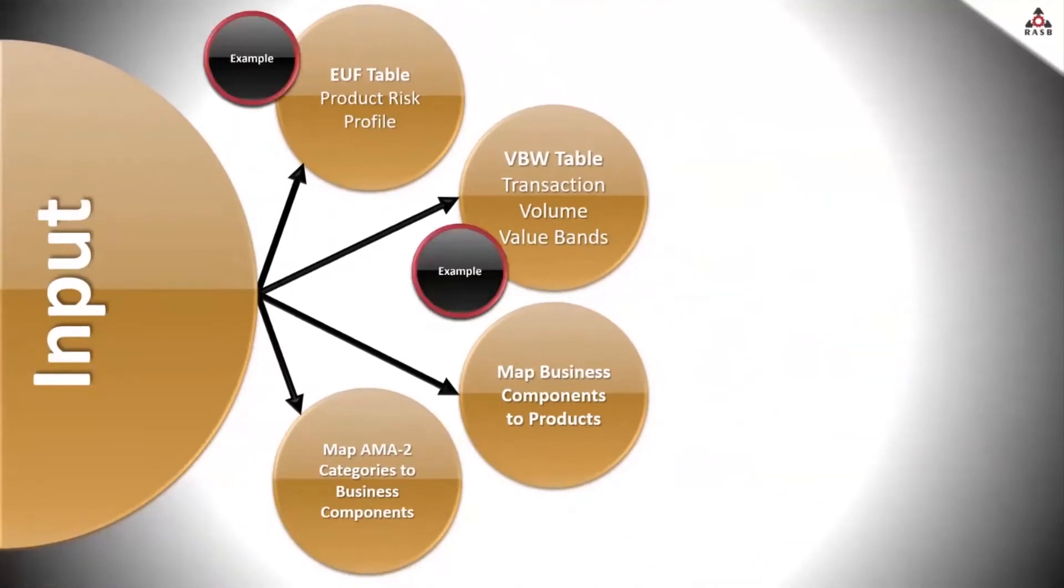And then we have the transaction volume band weightings or VBWs. Of course, the more of a risky product the organization sells, the more it adds to the organization exposure. So a value band weighting is basically assigned to each product based on the amount of daily new business booked. And the value band weightings are a measure of the severity of potentially unexpected losses relative to the sale of a specific product.